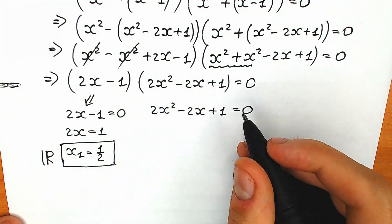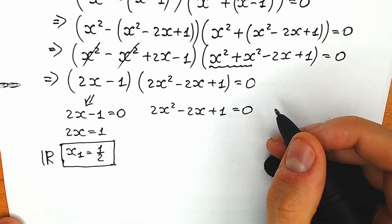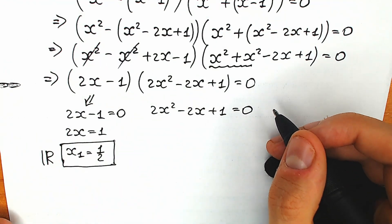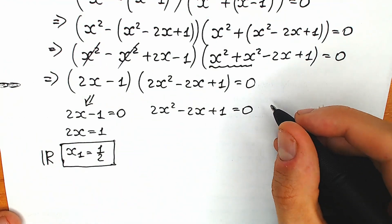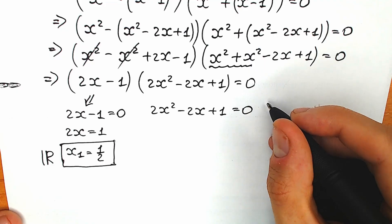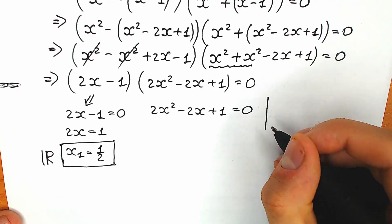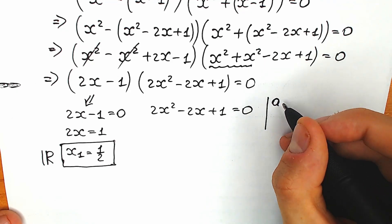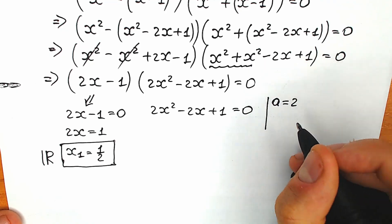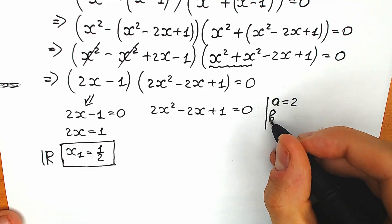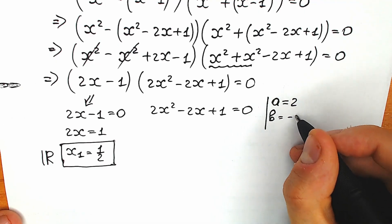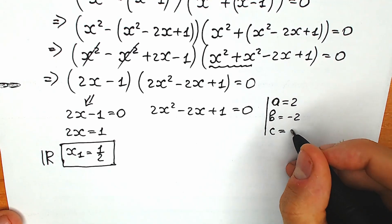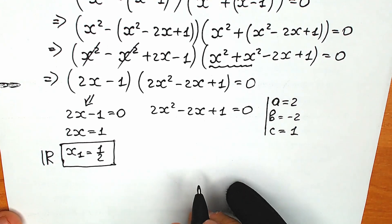Now let's solve the quadratic equation: 2x squared minus 2x plus 1 equals 0. There are many ways to solve this, but I'll use the basic method of coefficients: a equals 2, b equals minus 2, c equals 1.